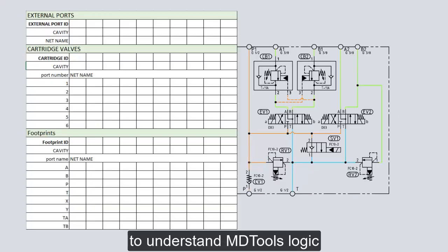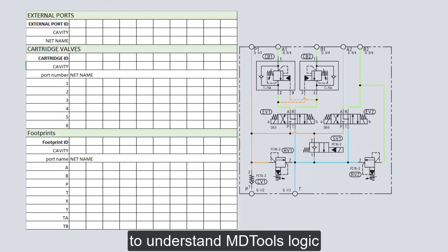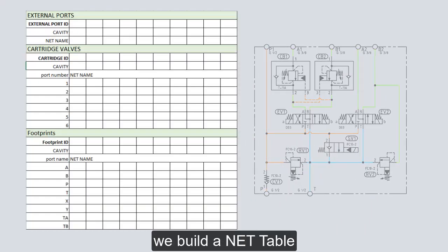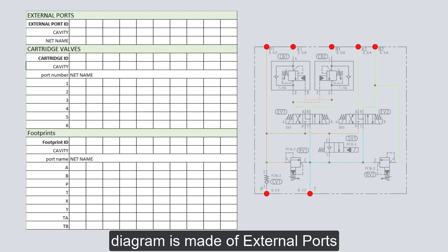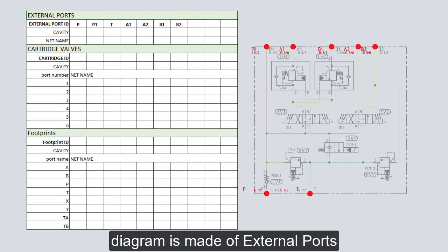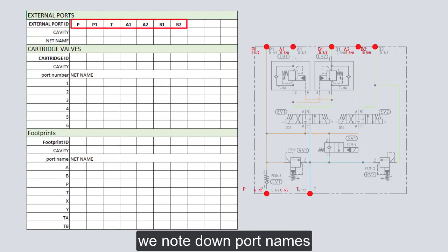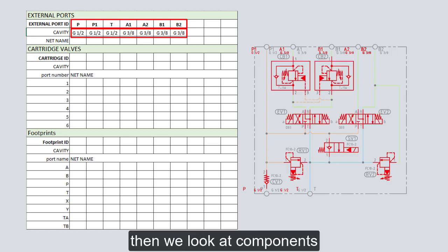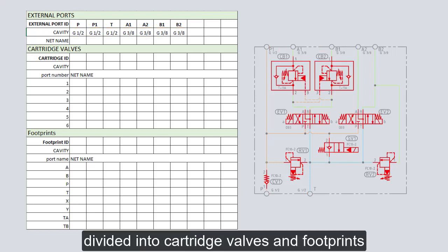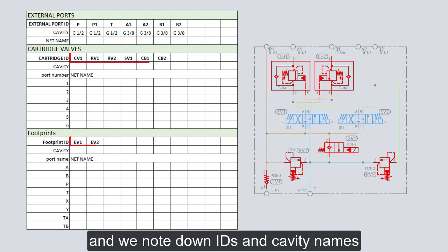To understand MD2's logic, we build a net table. The diagram is made of external ports. We note down port names and sizes. Then we look at components, divide them into Curtis valves and footprints, and note down IDs and cavity names.